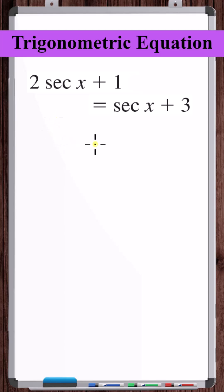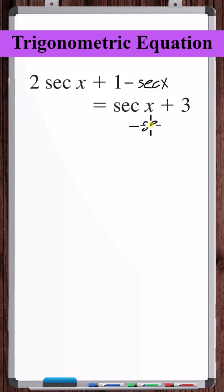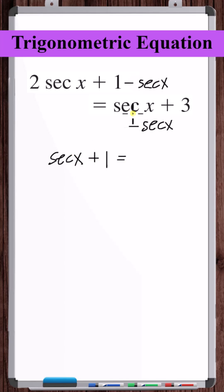Let's solve this trigonometric equation. We can start by subtracting secant x from both sides. 2 secant x minus secant x is just secant x, and secant x minus secant x is 0. Now let's subtract 1 from both sides.